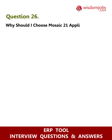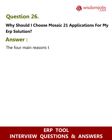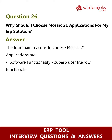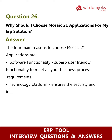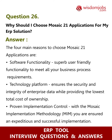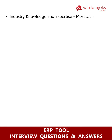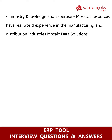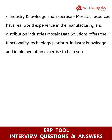Question 26: Why should I choose Mosaic 21 applications for my ERP solution? Answer: The four main reasons are: software functionality — superb, user-friendly functionality to meet all your business process requirements; technology platform — ensures the security and integrity of enterprise data while providing the lowest total cost of ownership; proven implementation control — with the Mosaic Implementation Methodology (MIM), you are ensured an expeditious and successful implementation; and industry knowledge and expertise — Mosaic's resources have real-world experience in the manufacturing and distribution industries.